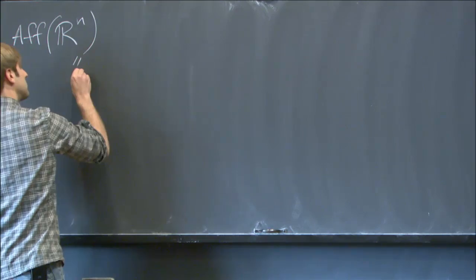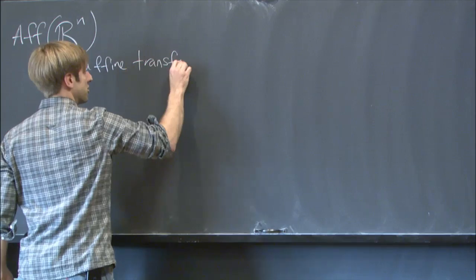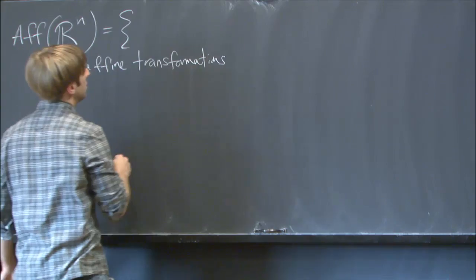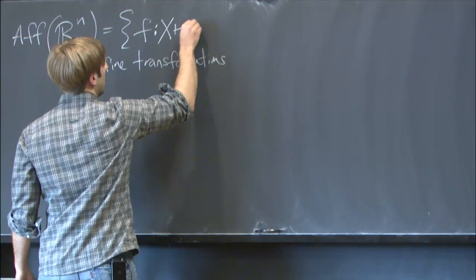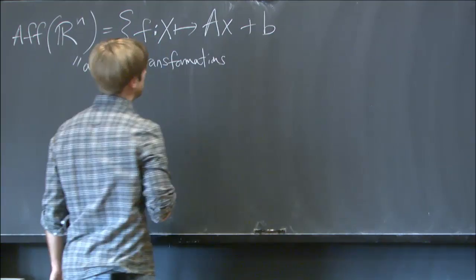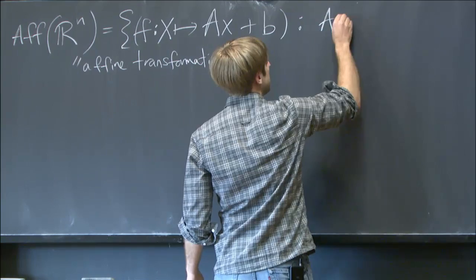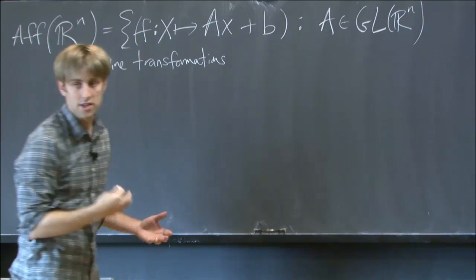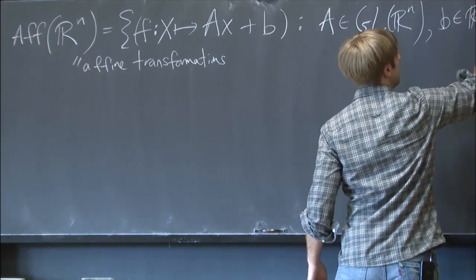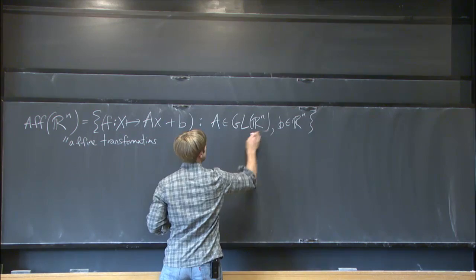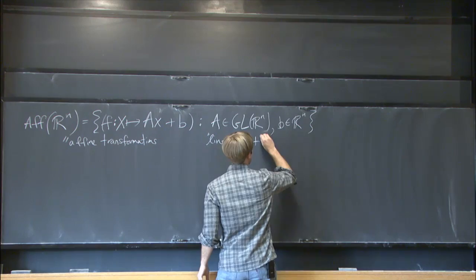This is about complete affine manifolds and orbifolds, and the group actions we use to construct such manifolds and orbifolds. Let me introduce the affine group. Aff(R^n) denotes the group of affine transformations of R^n — all maps from R^n to R^n of the form x maps to Ax plus B, where A is an invertible linear transformation (an n-by-n invertible matrix) and B is a translation vector. A is called the linear part and B is called the translational part.